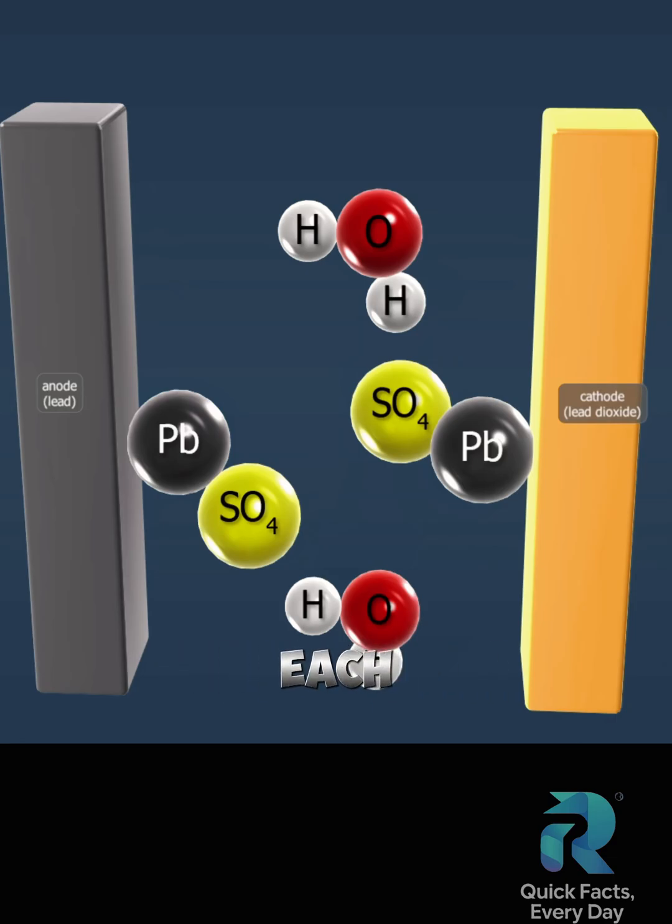These processes occur during each charge cycle. When the battery discharges, the direction of the current is opposite to the direction when the battery is charging.